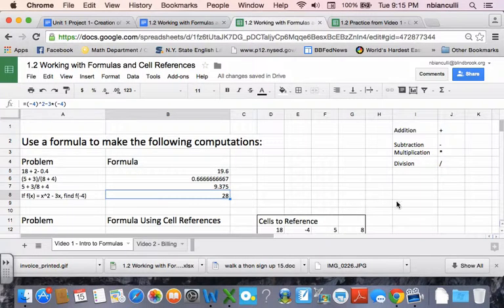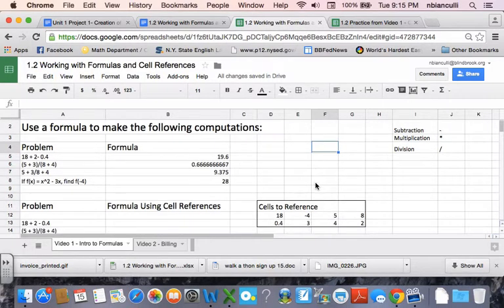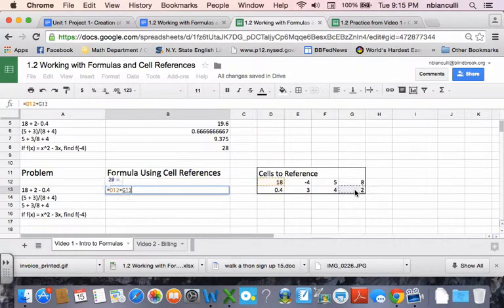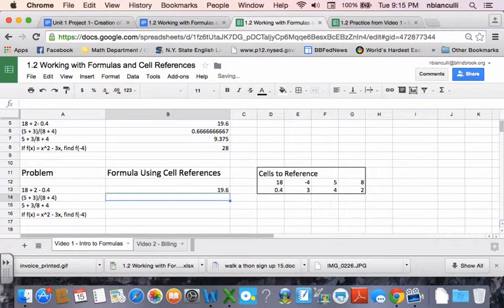Now, what normally happens in Excel is you do things based on input data. So you wouldn't normally write something like 18 plus 2 minus 0.4. What you would normally do is have data in cells, and you would reference the data. So for example, here equals, well, 18 is in D row, sorry, column D in row 12. So if I clicked on this, it would give me D12. And then I could add to that 2, which is G13, minus 0.4, which is in D13. And if I press enter, I get that.